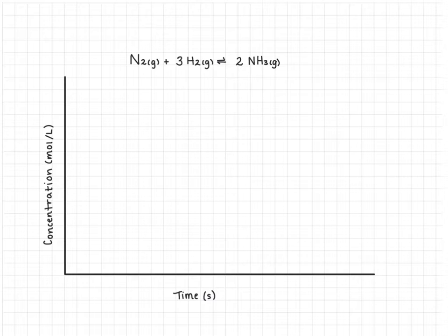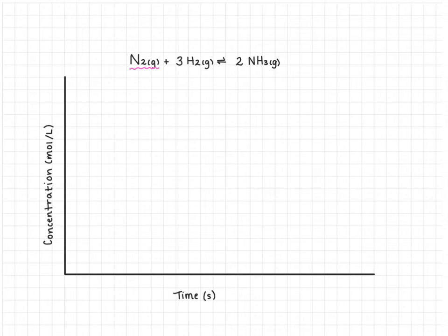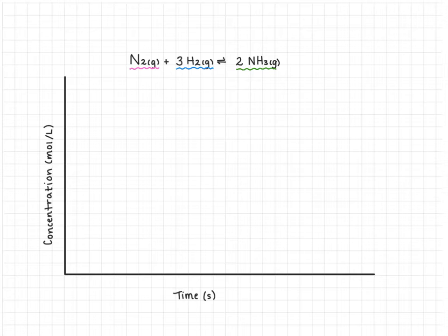I'm just going to quickly color code our reactants and products. Nitrogen is going to be represented by a pink line on our graph, hydrogen is going to be represented by a blue line, and ammonia will be represented by a green line.